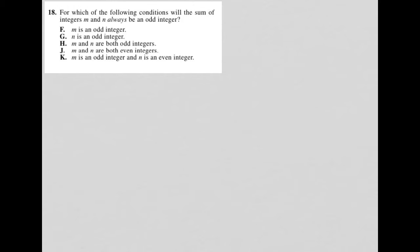So this question says, for which of the following conditions will the sum of integers m and n always be an odd integer? So how do I translate this a little bit? Well, it's saying that I want m plus n to equal an odd number.